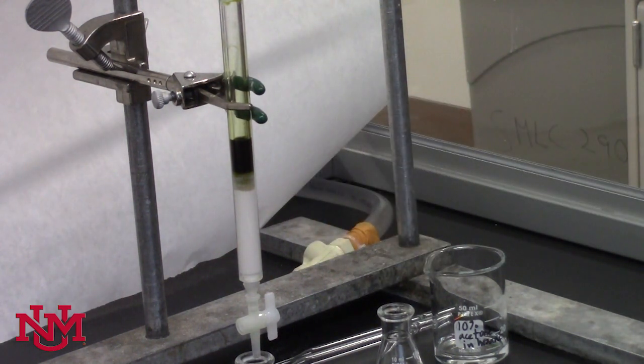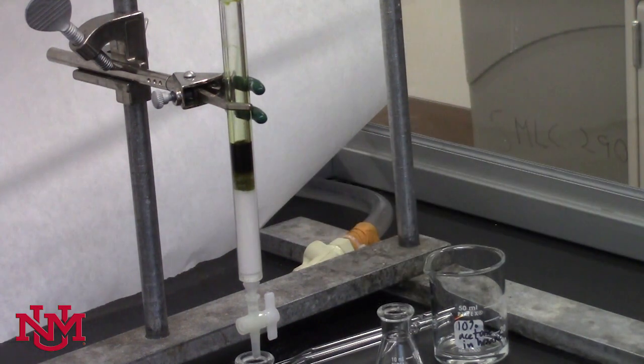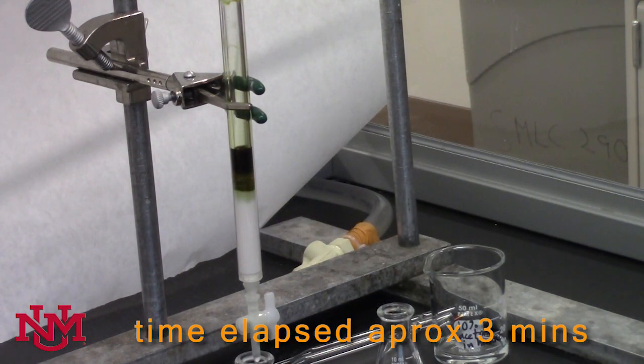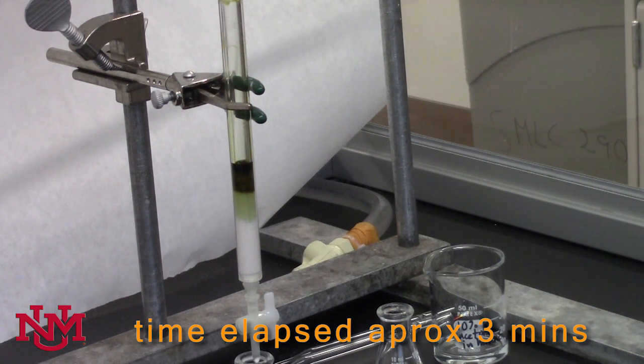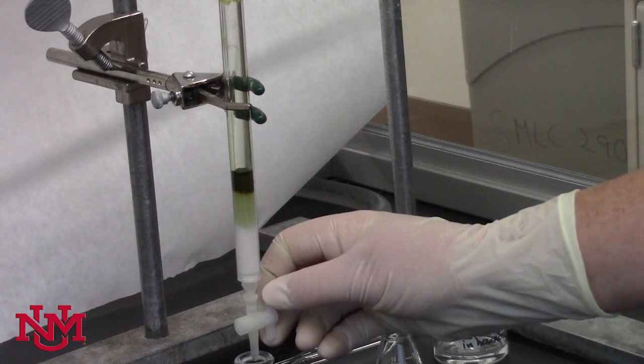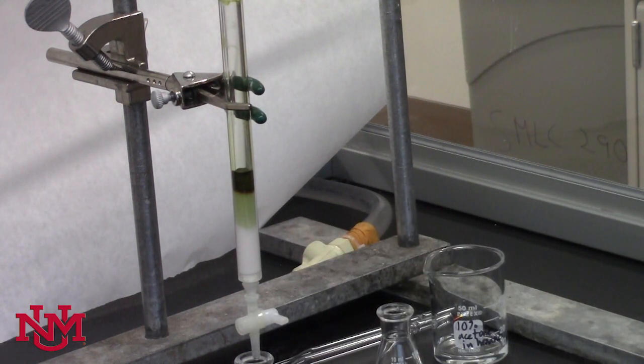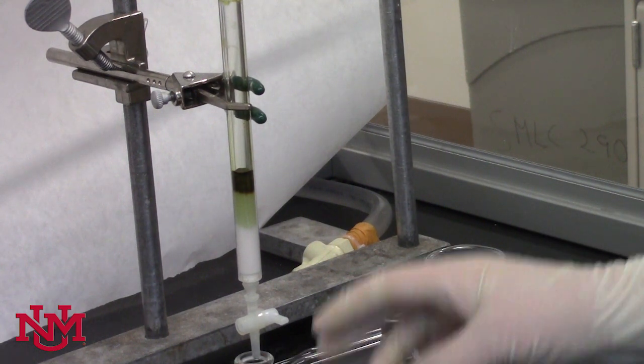Now we'll open the stopcock and continue to drain the solvent level so that the top of the green is again even with the sand. You'll see the sand start to turn green, as well as the alumina once the spinach extract reaches that. At some point it's going to stop moving and stay stuck sort of at the top of the column. That's about an appropriate solvent level. At this point, you would add a little bit more hexane.